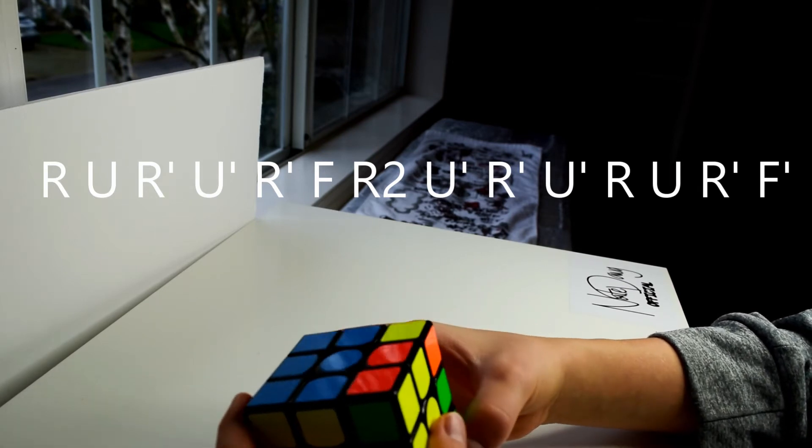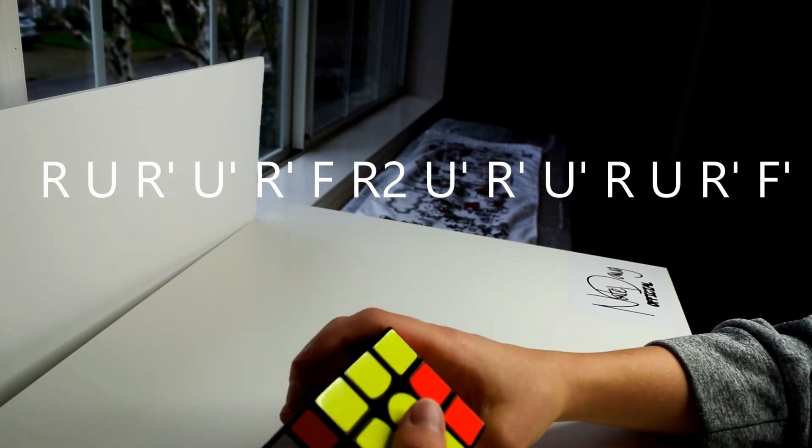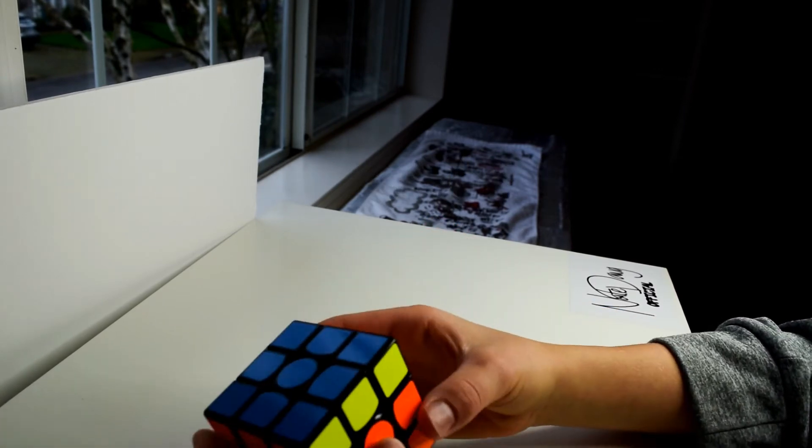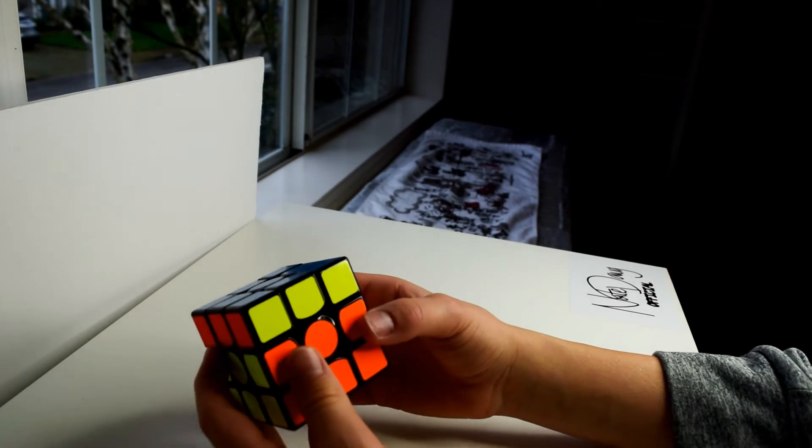R, U, R inverted, U inverted, R inverted, F, F, R two, U inverted, R inverted, U inverted, R, U, R inverted, F inverted. Now we are one step away from completing the cube.